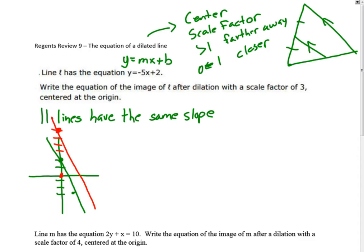The real simple process is, all you have to do, the y-intercept is the point (0, 2). If we're going to dilate that with a scale factor of 3, it becomes (0, 6). And so now, the equation is y equals negative 5x plus 6.